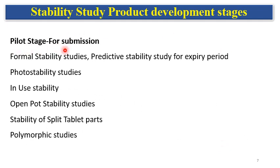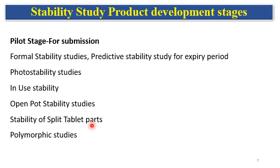At the pilot scale or pilot stage for submission, stability studies are called formal stability studies on primary batches for product submission. These involve predictive stability study for the expiry period, which includes accelerated stability testing. Photo stability studies are done on the drug product. In-use stability studies and open-pot stability studies are also performed. For tablet formulations with a break line, stability of the split tablet is also done. Polymorphic studies — including form retention and form conversion studies by XRD — are also performed.